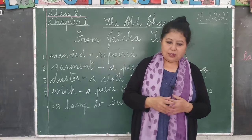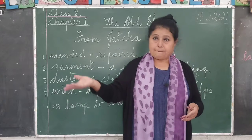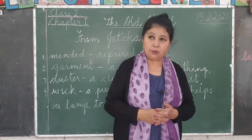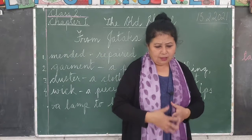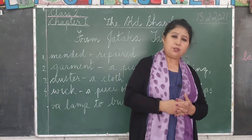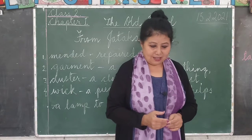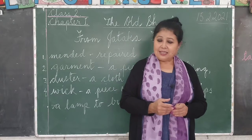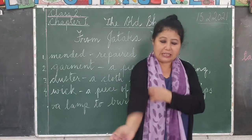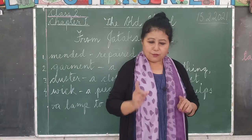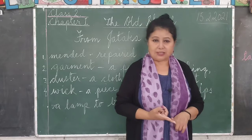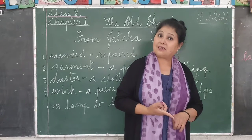The boy said he will use the old bed sheet as a curtain to cover the windows. Then the teacher asked, 'What will you do with the old curtain?' The student replied, 'I will use the old curtain as a duster.' Now, this duster is made out of cloth — we use cloth pieces and rags at home to dust tables and chairs. So the boy said he will use the old curtain as a duster.